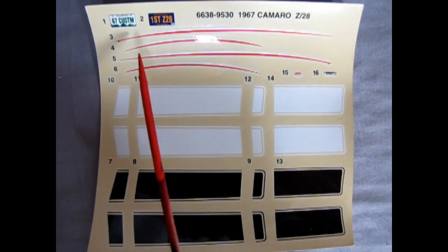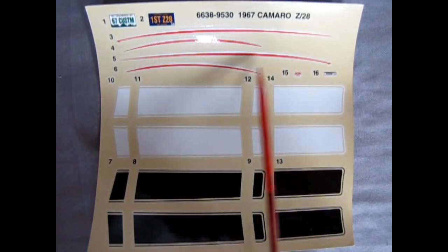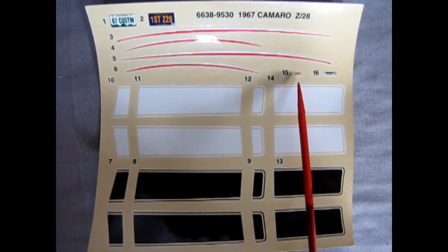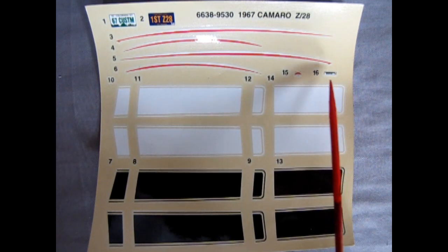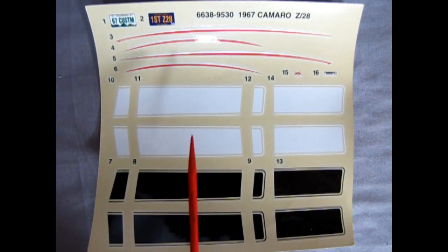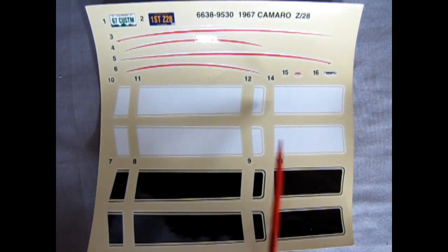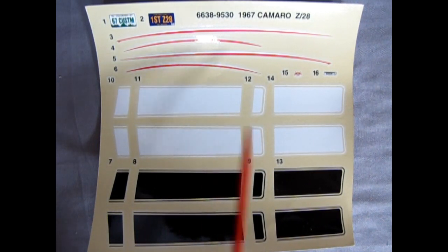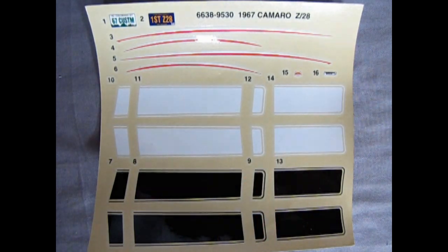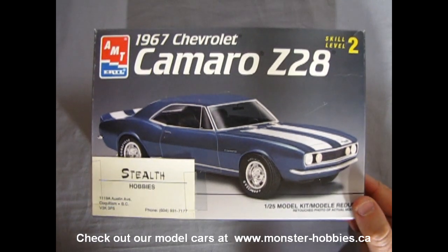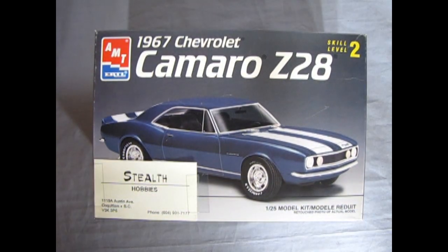Anyway, we have these nice red pinstripes, red and white pinstripes, as well as some decals for the air cleaner and under the hood. And then you've got your choice of these great white stripes or black ones. And of course, you can always save these for other AMT Camaros in your collection. And that completes our look at the AMT 1967 Chevy Camaro Z28.